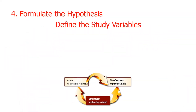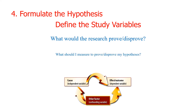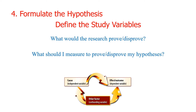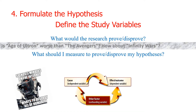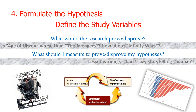Step 4: Formulate the hypothesis and define the study variables. What would the research prove or disprove? This is where null and alternative hypotheses come into play. Defining them early can help clarify what possibilities you expect to learn at the end of the research. We also need to define dependent and independent variables clearly, constructing conceptual and operational definitions for all variables. Our sample hypothesis: Is Age of Ultron worse than The Avengers, and how about Infinity Wars? Do lesser earnings equal bad? Does lazy storytelling equal worse?